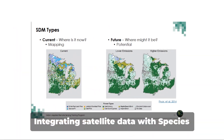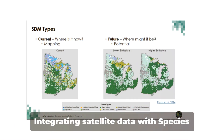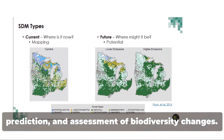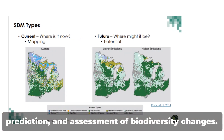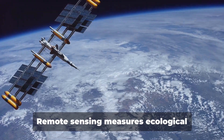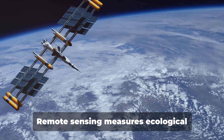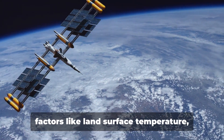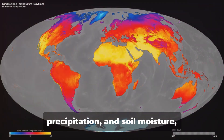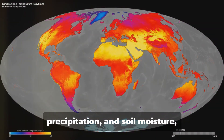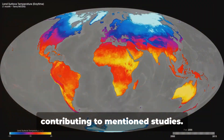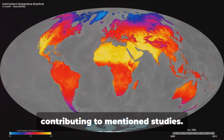Integrating satellite data with species distribution models enables monitoring, prediction, and assessment of biodiversity changes. Remote sensing measures ecological factors like land surface temperature, precipitation, and soil moisture, contributing to these studies.